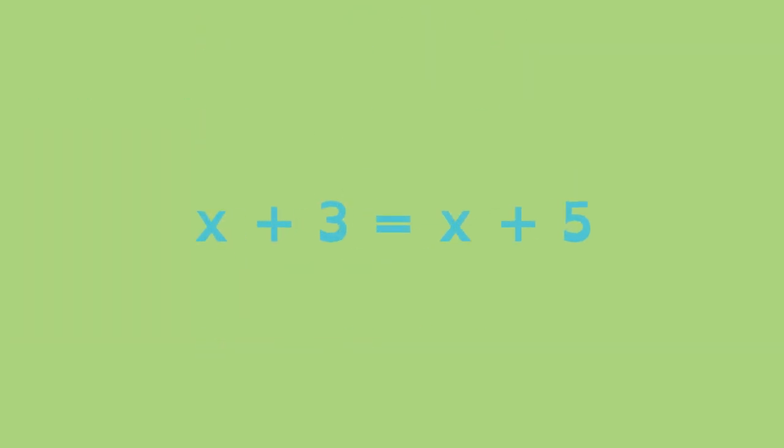Linear equations don't always have just one solution. In this equation, the solution has to be a value for x which when added by 3 gives the same answer as when added by 5. But the same number can't be added by 3 and 5 to make the statement true. This equation has no solution.